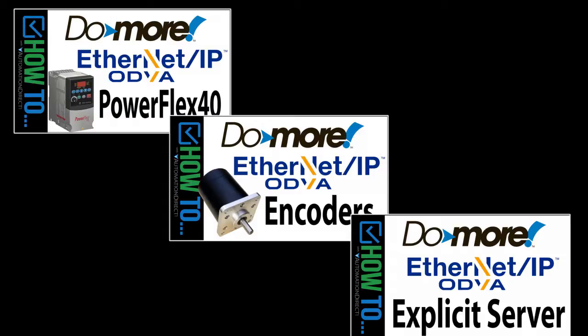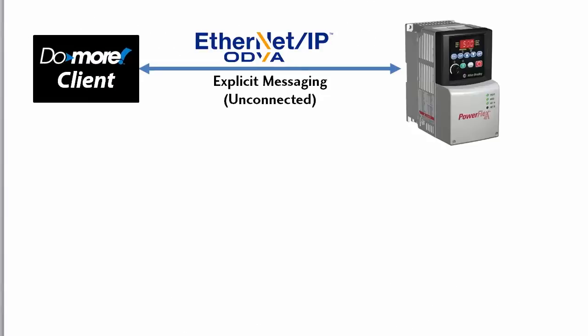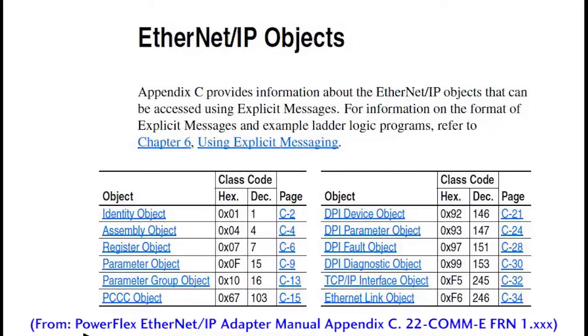For the purposes of this video, let's assume we use a Do More as the client and an Allen Bradley PowerFlex 40 variable frequency drive as the server, and that the PowerFlex 40 drive is equipped with the Ethernet adapter module to make it Ethernet IP compatible. Appendix C of that Ethernet adapter manual summarizes everything we need to know about how to access the data in the PowerFlex 40 drive via Ethernet IP.